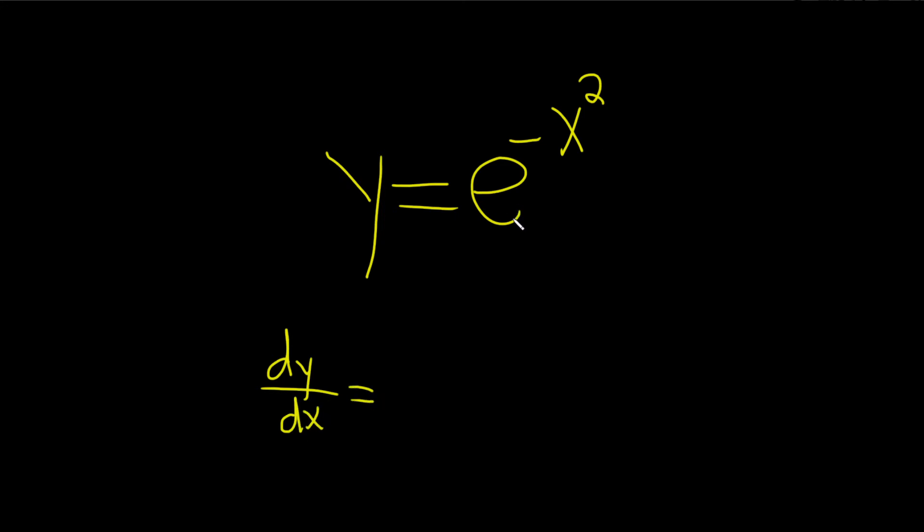So what you do to use the chain rule is you just take the derivative of your outside function, which is e to the x, and you leave it untouched. You leave the inside piece alone, like this. And then you multiply, so times the derivative of the inside function.